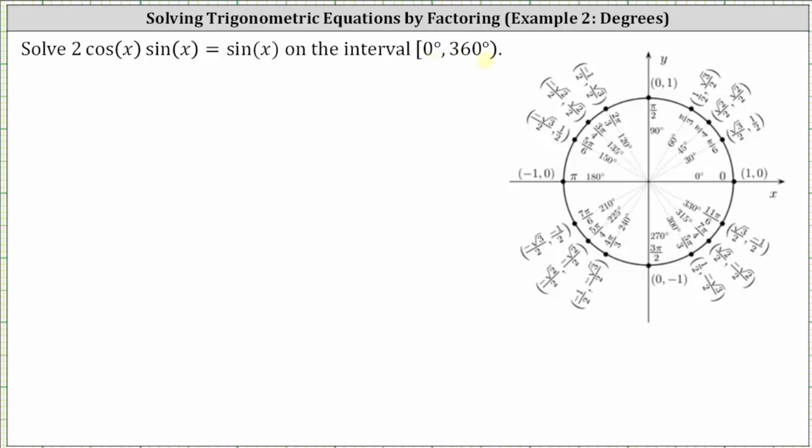We will solve this equation by factoring, which means for the first step we will set the right side of the equation equal to zero by subtracting sine x on both sides. We do not want to divide both sides by sine x, because we will be dividing out some of the solutions.